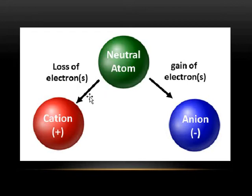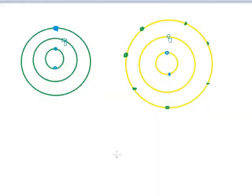This is a neutral atom. When it loses electrons it becomes a cation, and when it gains electrons it becomes an anion. So, this is the structure for sodium. It has 11 electrons: 2 in the first orbit, 8 in the second orbit, and finally one electron in the outermost orbit. The number of electrons is 11, and the number of protons will also be 11.